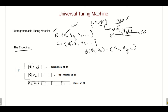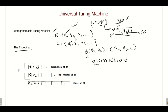For that encoding, we encode q1 with a single '1', a2 with two '1's, and these are separated using '0's. So q2 is encoded as two '1's, a3 as three '1's, and the left movement is encoded as a single '1'. For example, the transition delta(q1, a2) = (q2, a3, L) is encoded as: 0, then '1' for q1, then '0', then '11' for a2, then '0', then '11' for q2, then '0', then '111' for a3, then '0', then '1' for left movement. Like that, we encode every transition function of the given Turing machine M.